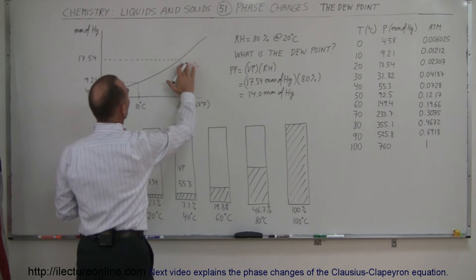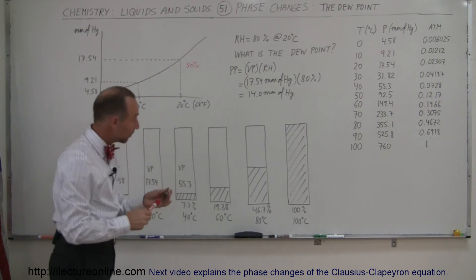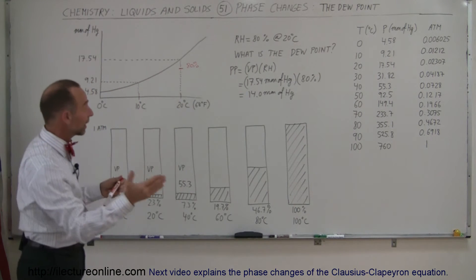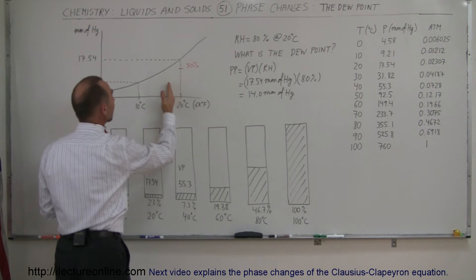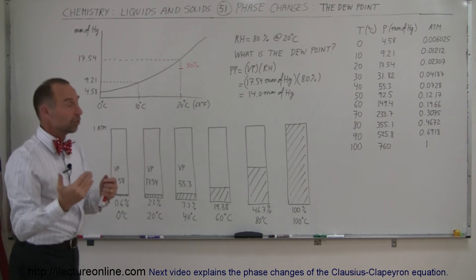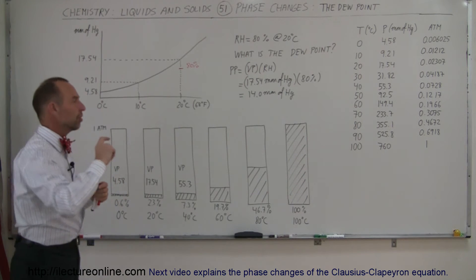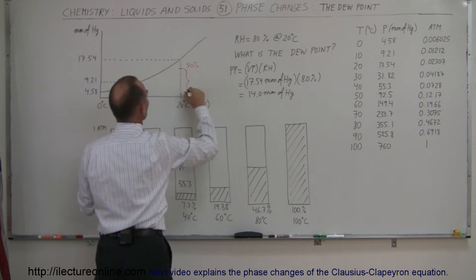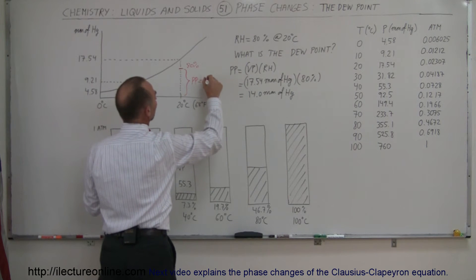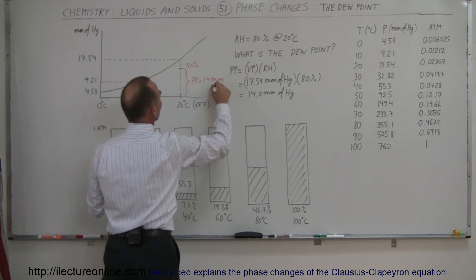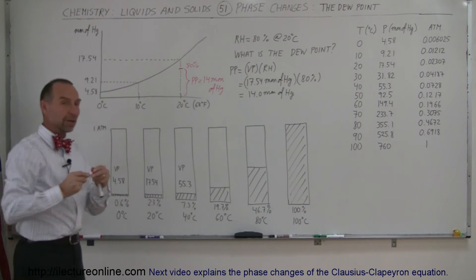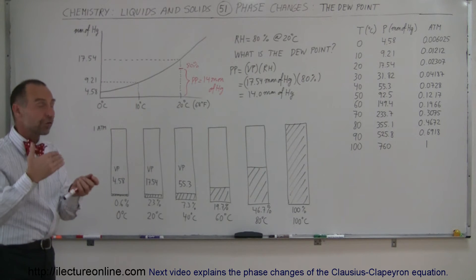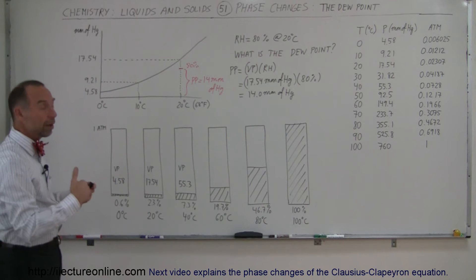So 80% is marked on the graph. Now the temperature begins to decrease: it becomes 19 degrees, 18 degrees, 17 degrees. The amount of moisture doesn't change, but as a percentage — the partial pressure, which is equal to 14 millimeters of mercury — that doesn't change. However, how much moisture the air can hold depends on the temperature. As the temperature decreases, the air can hold less and less, and the partial pressure becomes a larger fraction of the vapor pressure.